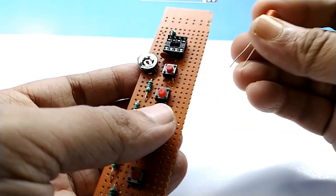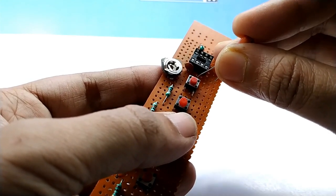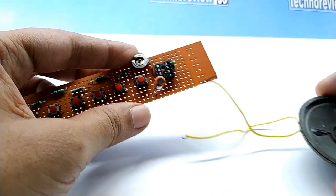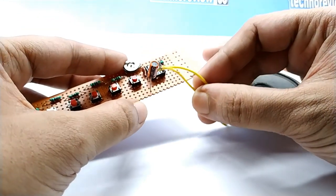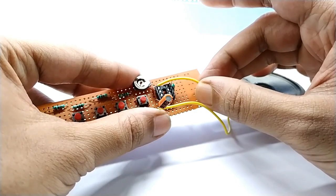Connect 10MFD electrolytic condenser positive pin to IC pin 3. Connect speaker wire to 10MF condenser negative pin and IC pin 1.